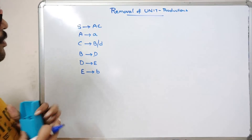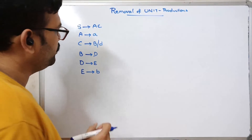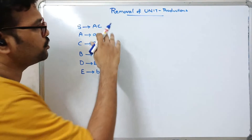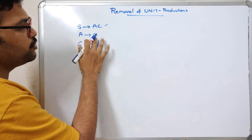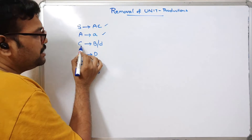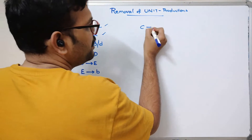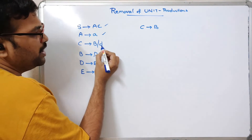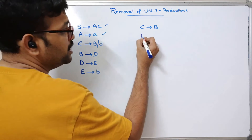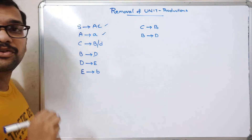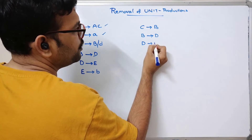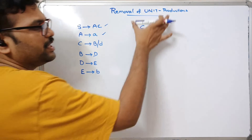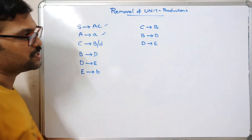Consider the second example CFG. We need to find the unit productions. S→AC has more than one non-terminal on the RHS, so not a unit production. A→a is a terminal, not a unit production. C→B: single non-terminal on both sides, so this is a unit production. C→d is a terminal, not a unit production. B→d: d is a terminal here, not a unit production. B→D: single non-terminal on both sides, this is a unit production. D→E: also a unit production. E→b is not a unit production because b here is a terminal. So our CFG has three unit productions.